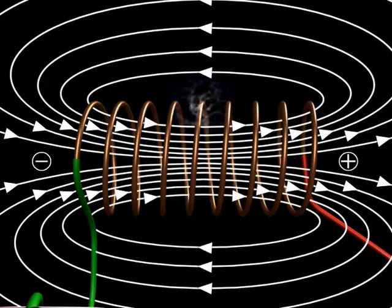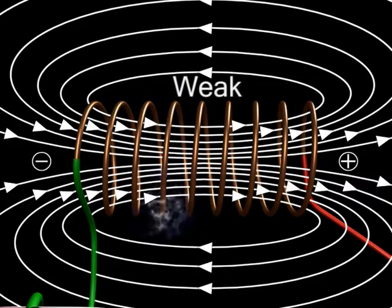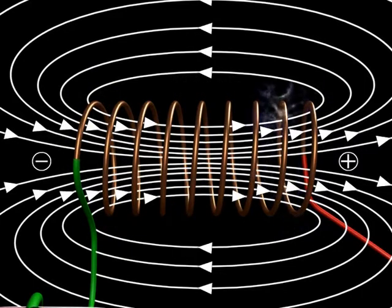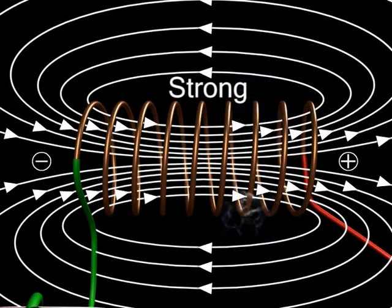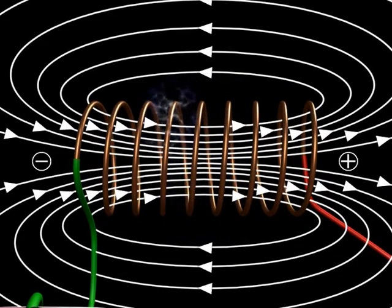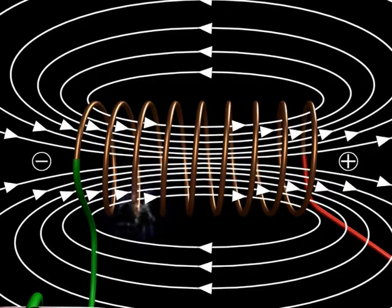Natižan, solenoid dhe bahaar, effective magnetic field vik ho jandhi hai. Jadon ki solenoid dhe under, magnetic field strong, nati uniform hundhi hai, jadon solenoid dhe axis dhe direction vich act kar di hai.